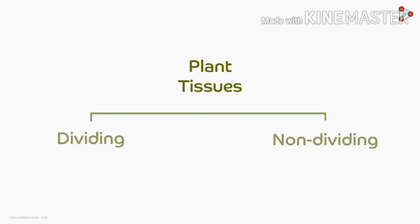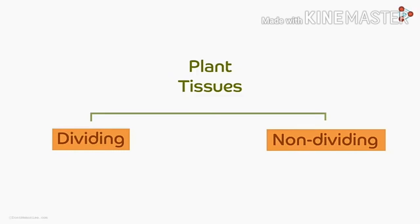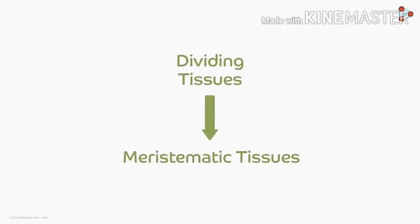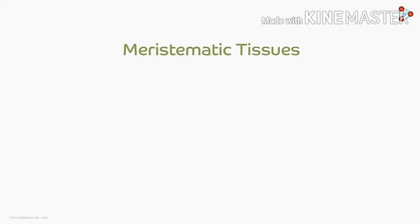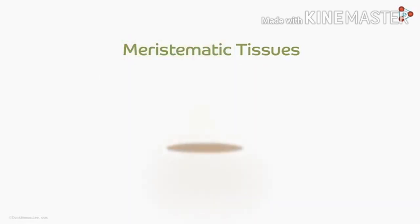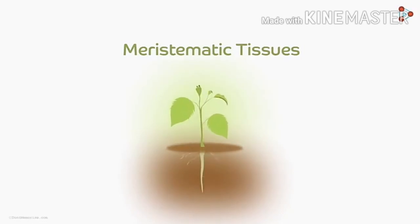First is dividing and the second is non-dividing. Now let's look at the technical terms used for them. Firstly, dividing tissues are also known as meristematic tissues — that is the formal term used for it. The word meristematic comes from the Greek word 'meristos' which means divided. So the main function of meristematic tissues is to divide and help in the growth of plants.